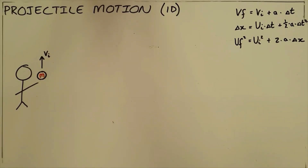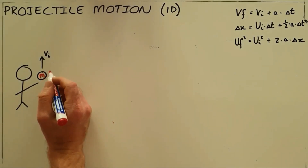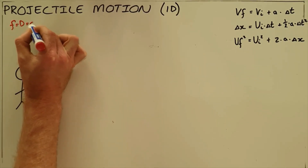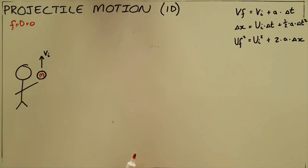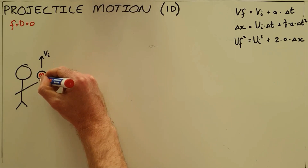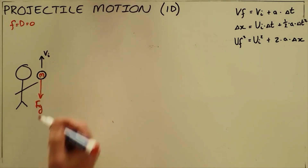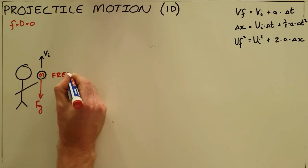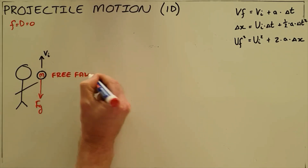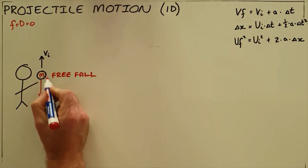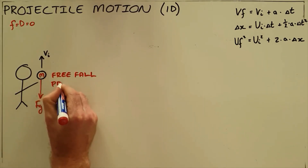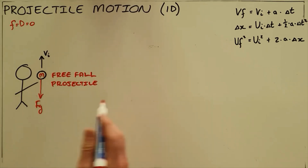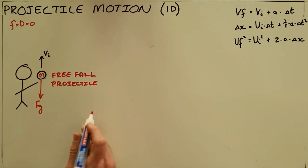If we consider an object with mass m that is either thrown or dropped in a vacuum, since it is in a vacuum the frictional force, drag force, or wind resistance is zero or negligible. This means there is only one force acting on that object: the force of gravity. We define this type of motion — where an object is only acted upon by gravity — as free fall, and we say that this object is a projectile.